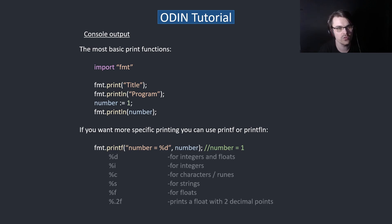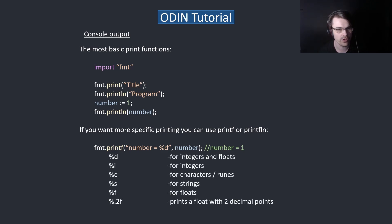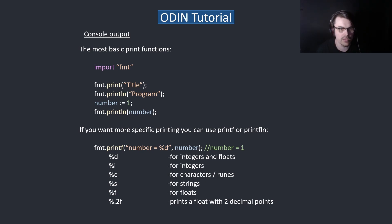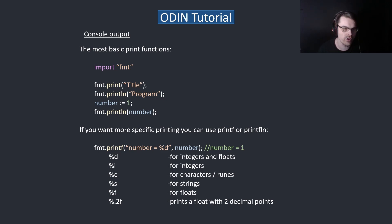You need to use format codes: %d is integer and float, %i is integer, %c is characters or runes — basically bytes, not characters — %s is for string, %f is for float. And you can put a precision specifier for the number of decimal places you want for float.